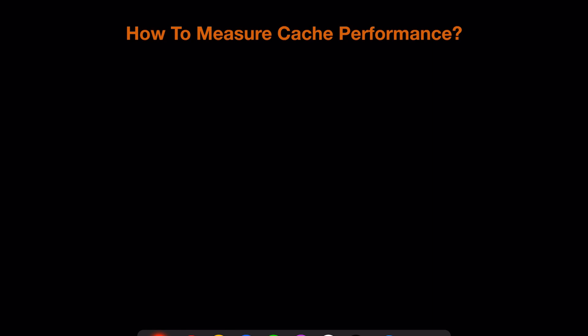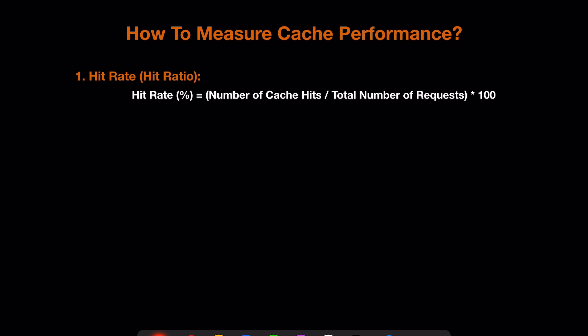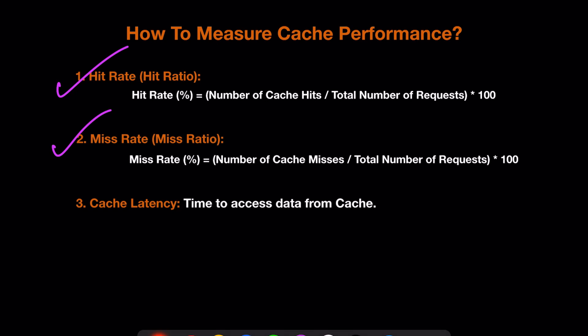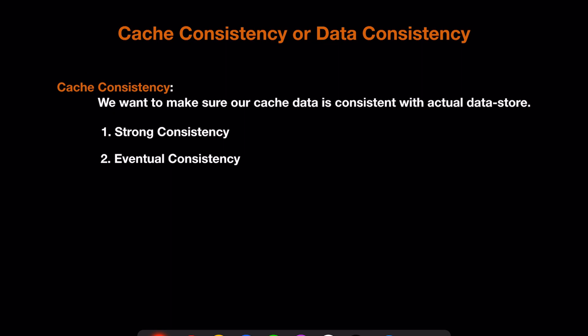Once we implement caching in our application, we need to measure how well our cache is being utilized. Key metrics include hit rate or hit ratio, calculated as the number of cache hits divided by total requests multiplied by 100, and miss rate or miss ratio, calculated as the number of cache misses divided by total cache requests multiplied by 100. A higher hit rate means we are doing well; a lower miss rate means we are doing well. We can also measure cache latency — the time to access data from the cache.